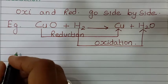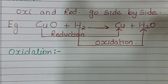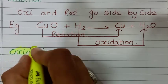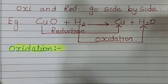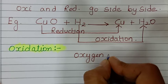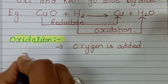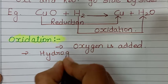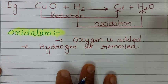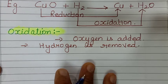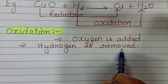Next definition: oxidation. The reaction in which oxygen is added or hydrogen is removed is called oxidation. For example: C plus O2 gives CO2 — addition of oxygen. Another example: 2Mg plus O2 gives 2MgO — addition of oxygen means oxidation.